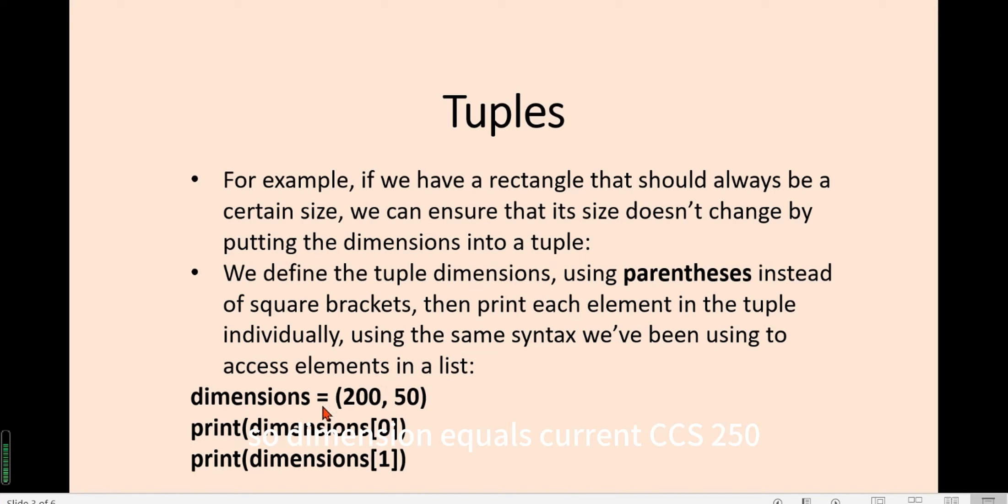So dimensions equals parentheses 200, 50. We create a tuple called dimensions with two elements. Then we can print dimensions first element using index zero, and print the dimension second element using index one.